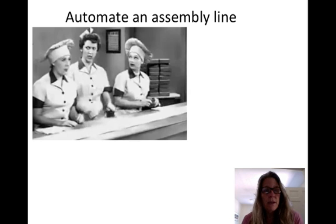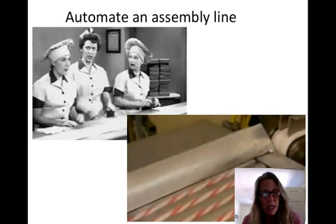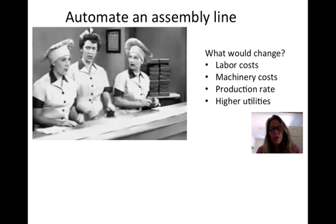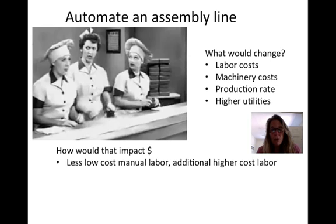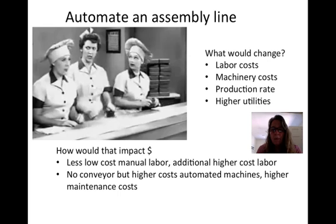An example is automating an assembly line — are we going to put machinery there that does the work for the people? This is a very complex problem because we need to consider what would change if we didn't have the manual assembly line and went to automation. We'd have different labor costs, different machine costs, different production rates, maybe different utility values. Lower manual labor costs, but you might have to hire somebody to manage the machinery and pay them more. There's no conveyor, but there might be higher automated machinery costs and higher maintenance costs.